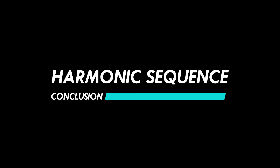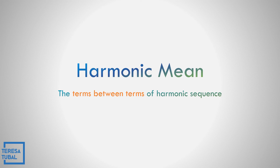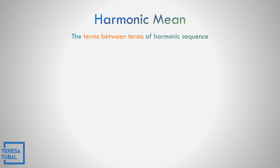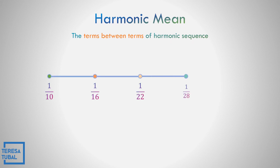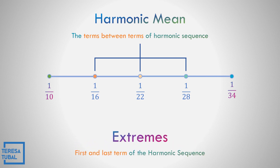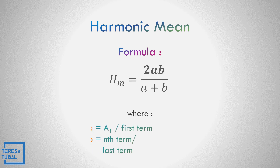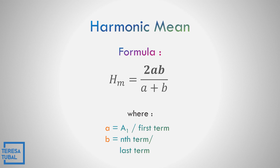So, what have you learned? Harmonic mean is the terms between terms of a harmonic sequence. For example, in 1/10, 1/16, 1/22, 1/28, 1/34, the harmonic means are 1/16, 1/22, and 1/28, and the extremes are 1/10 and 1/34. The formula to use when one harmonic mean is unknown is: HM = 2AB / (A + B), where A is the first term and B is the last term.